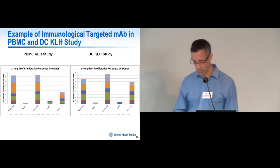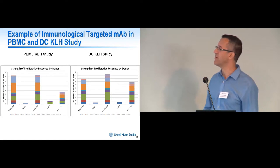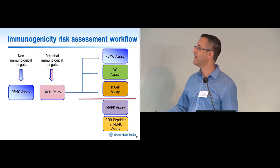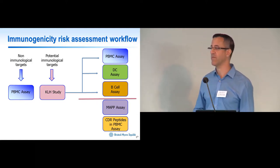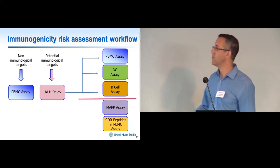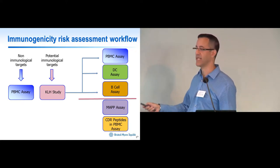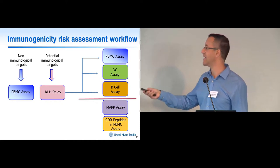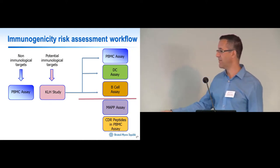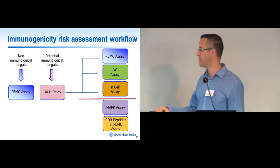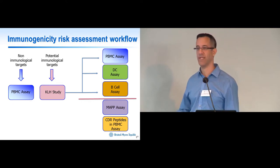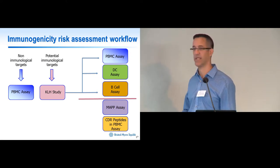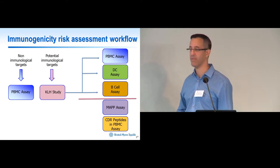Our general workflow in the Immunogenicity Risk Assessment group is as follows. For all non-immunological targets we go straight to the PBMC-based assay. If it's a potential immunological target or there's some other factor that might interfere, we do KLH studies to determine whether to use the PBMC, DC, or B cell-based assay. In cases where we see interference in all three, we can either run peptide mapping assays to identify which peptides are presented by dendritic cells, run those peptides in the PBMC-based assay, or create overlapping peptides of the CDR regions and run those in the PBMC-based assay.